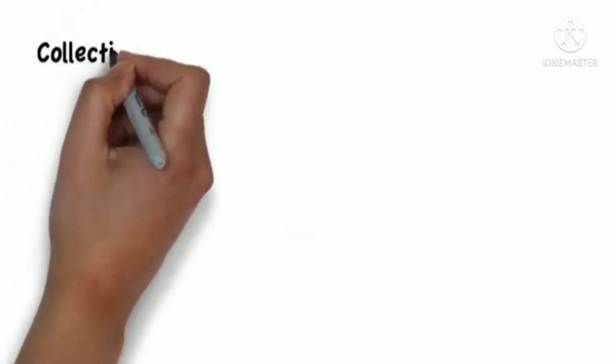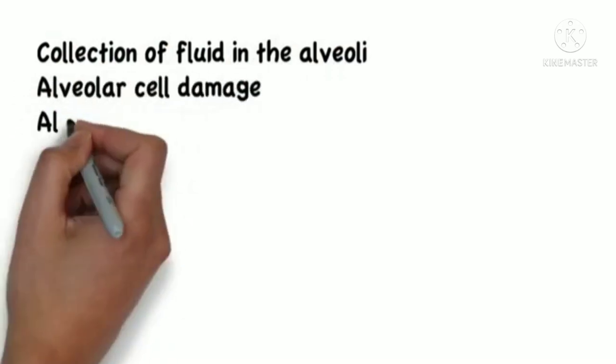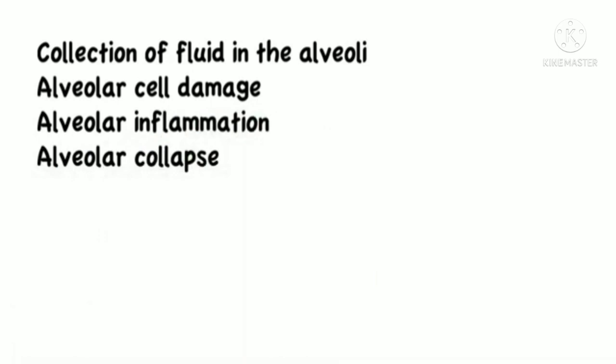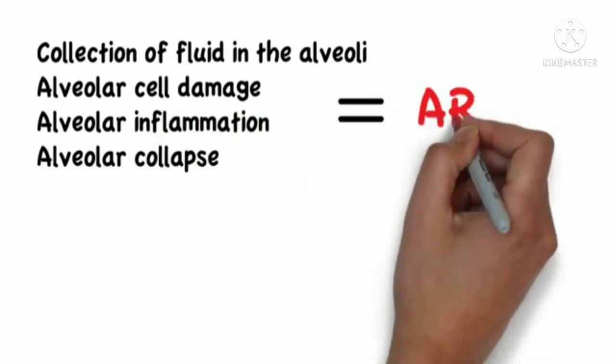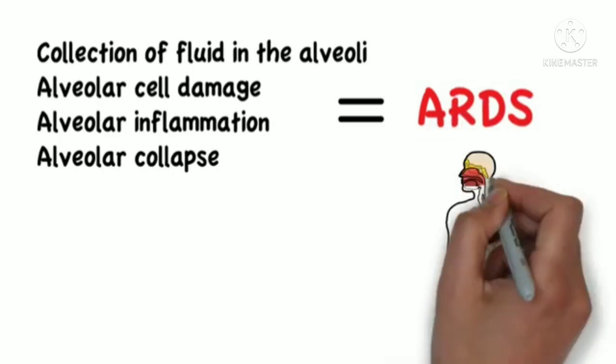This collection of fluid in the alveoli together with alveolar cell damage, alveolar inflammation, and alveolar collapse can lead to what is called acute respiratory distress syndrome.